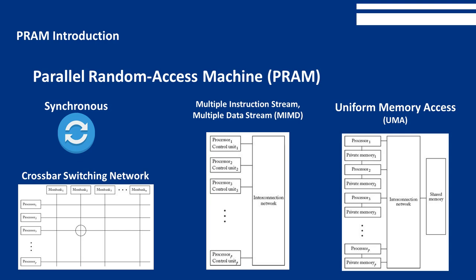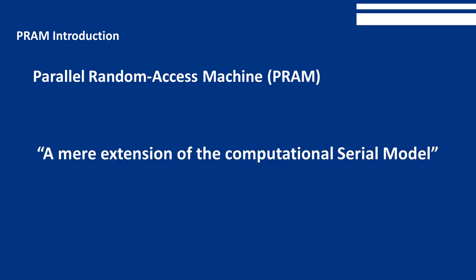A crossbar switching network shows a possible interconnection network for such a machine, though it would be quite costly to actually construct. The PRAM model, however, is a near extension of the computational serial model, making it easy to deal with in logical terms when designing algorithms.